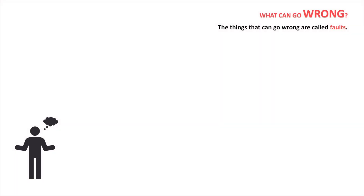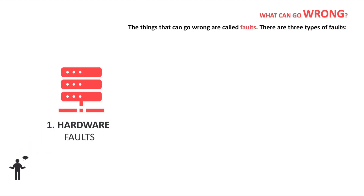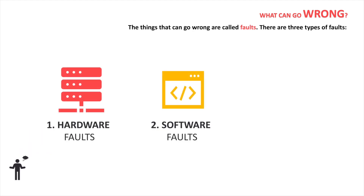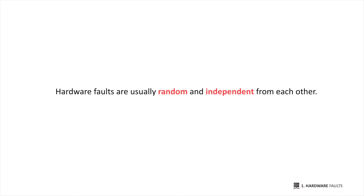It basically means that the service or application should continue to work correctly even when things go wrong. So what can go wrong? The things that can go wrong are called faults, and there are mainly three different types: hardware faults, software faults, and human faults.